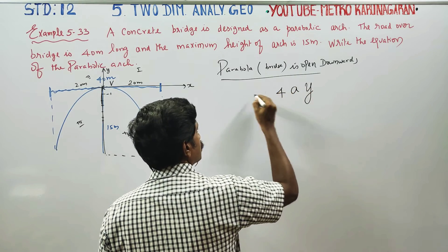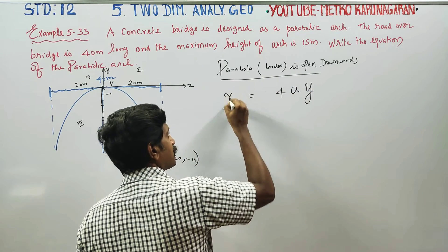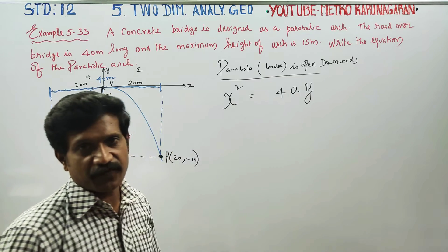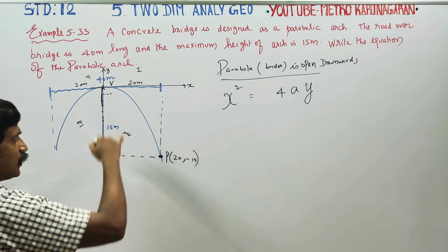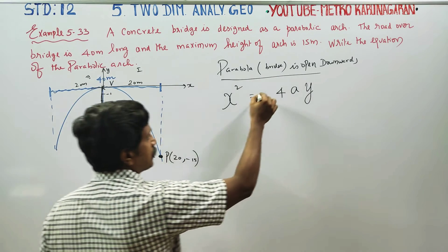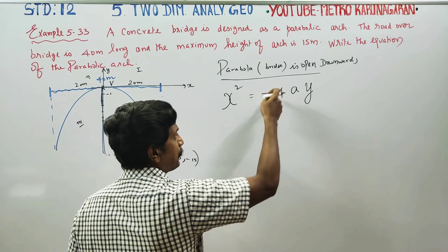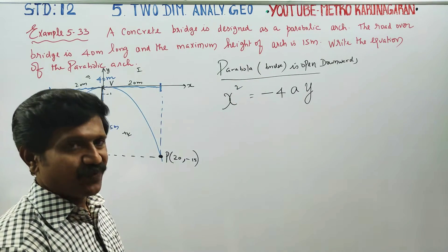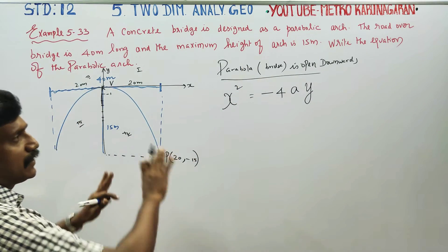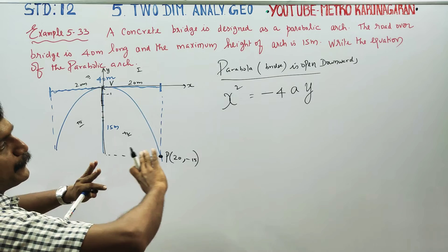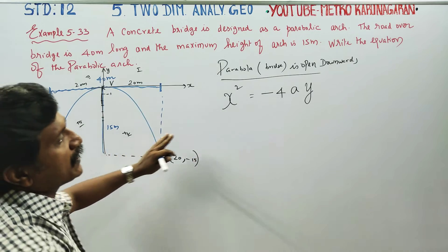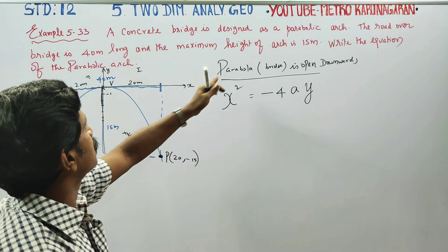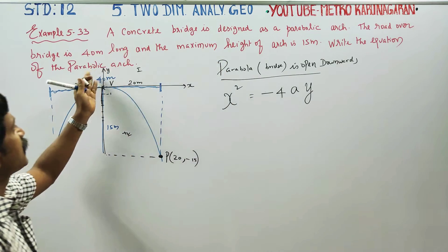This is the equation of a parabola. Down is minus, up is plus — up is always positive, down is always negative. That is minus. The parabola is ready; the bridge and arch are ready.